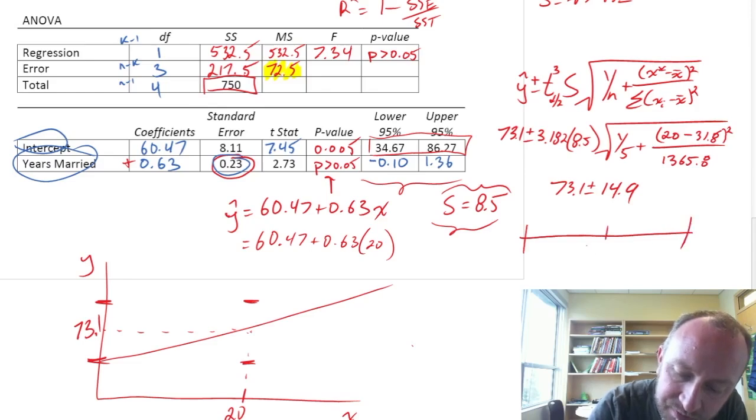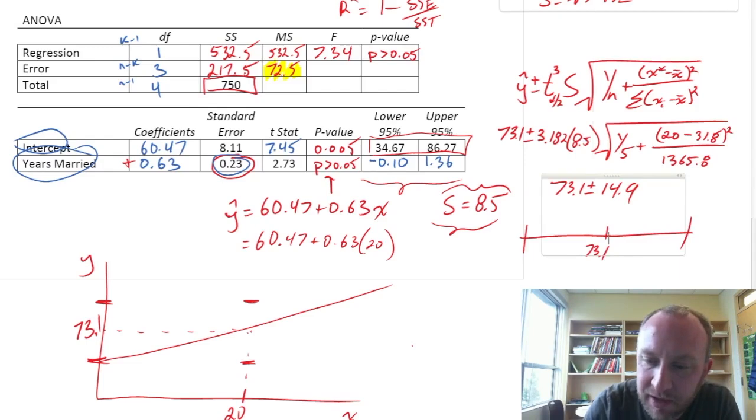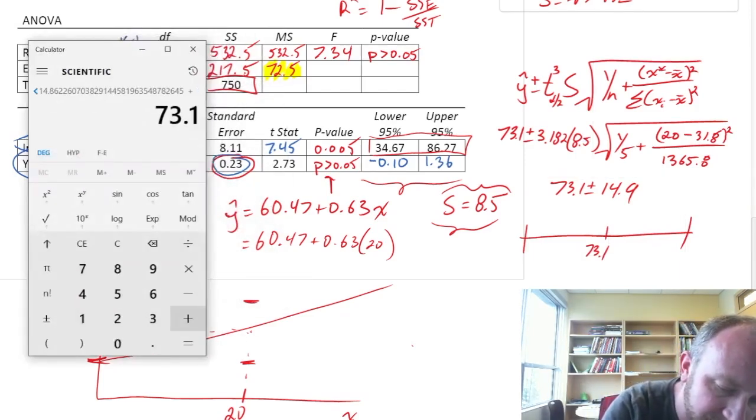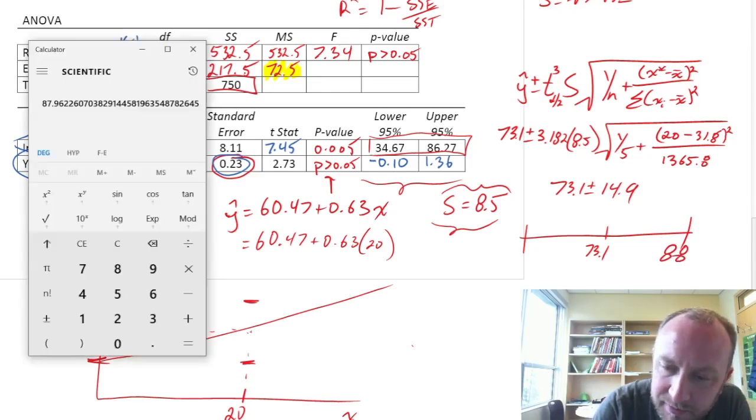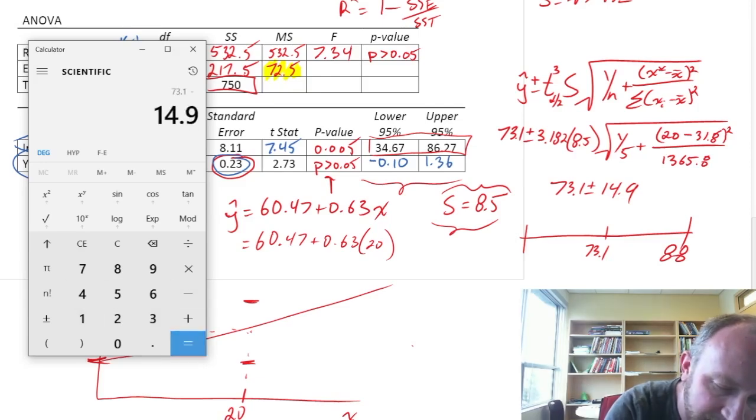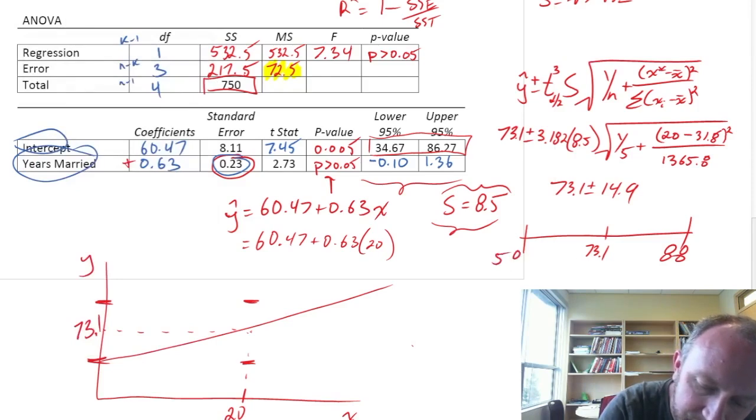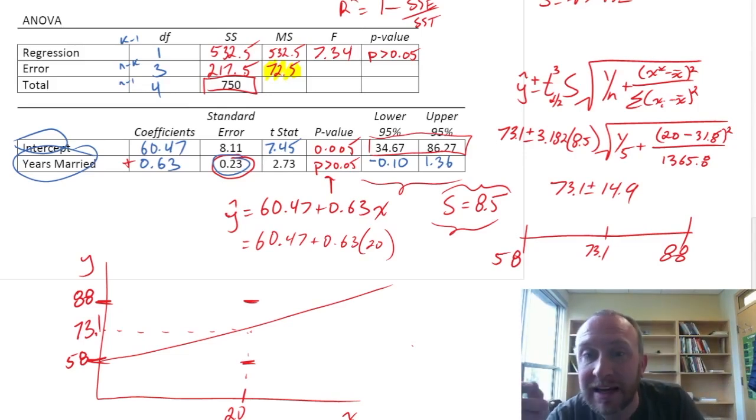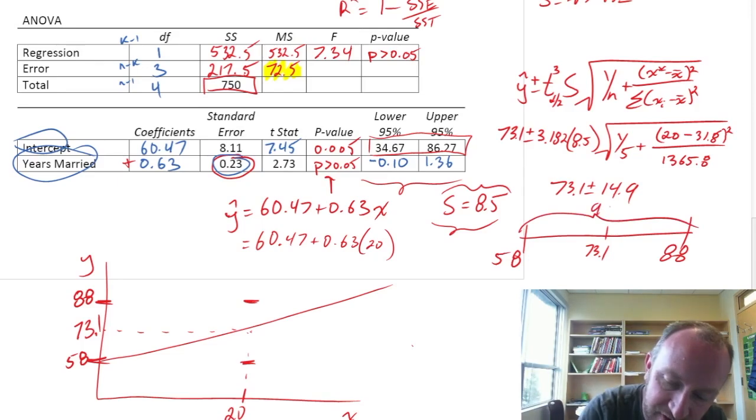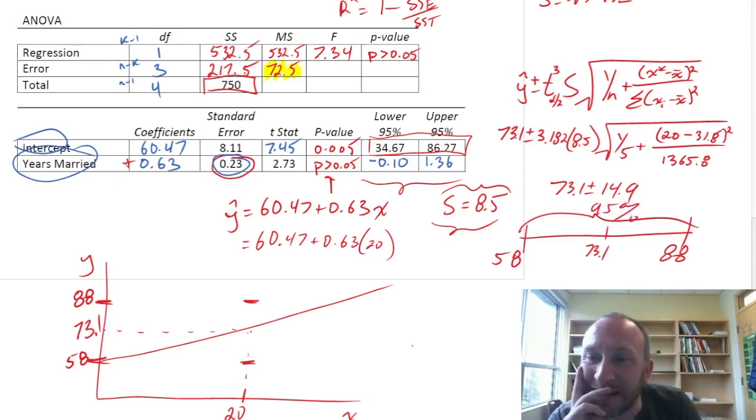So, we have 73.1 plus or minus 14.9. So, our confidence interval estimate, 73.1. That upper limit, if I add 73.1, upper limit is 88. And the lower limit, 73.1 minus 14.9, the lower limit is 58. So, for a couple who's been married for 20 years, the average happiness in terms of this index is 73.1. Our 95% confidence interval says that we're 95% confident that the average happiness index for a couple who's been married for 20 years is between 58 and 88.